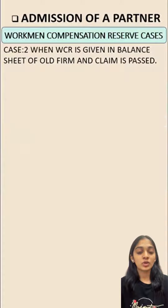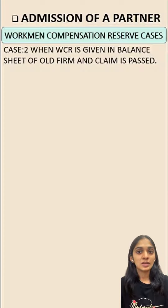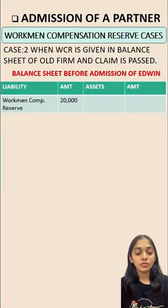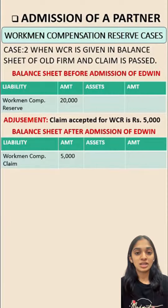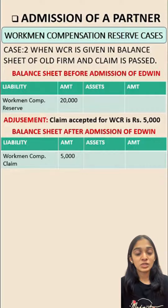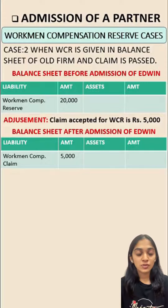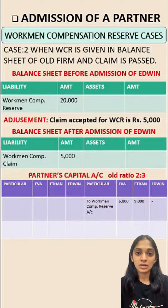The second case is when workman compensation reserve is given in the balance sheet of the old firm and a claim is also present. Here, workman compensation reserve is 20,000 and the claim is 5,000. Since the claim is a liability, we write workman compensation claim of 5,000 on the liability side of the balance sheet. From the total reserve of 20,000, we subtract 5,000, leaving 15,000, which is distributed among the old partners in their old ratio.